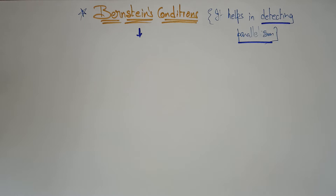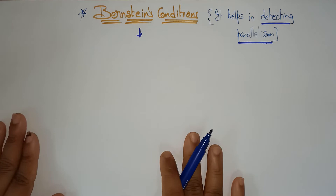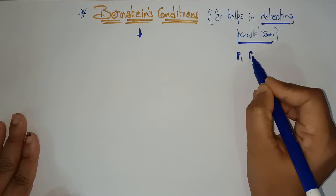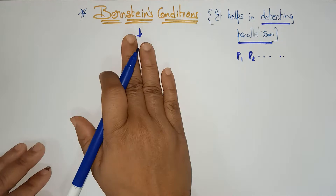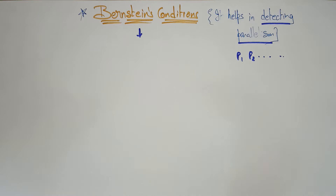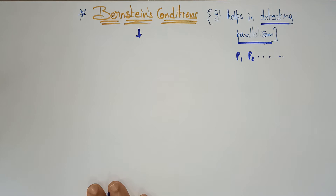Welcome back. The next topic in advanced computer architecture is Bernstein's conditions. In the previous video, I explained the conditions of parallelism. The main use of this condition is detecting parallelism. Suppose different processes exist — P1, P2, and so on. This condition helps identify whether there are any dependencies between processes: resource dependencies, output dependencies — and detects parallelism. That is the use of Bernstein's condition.